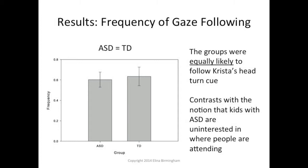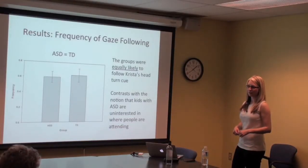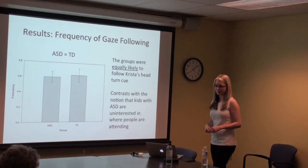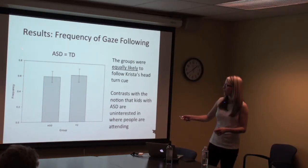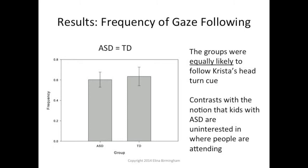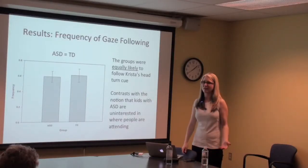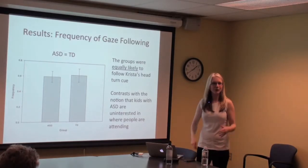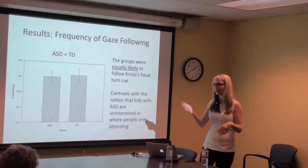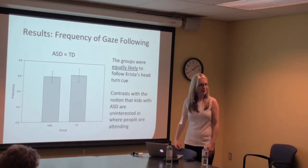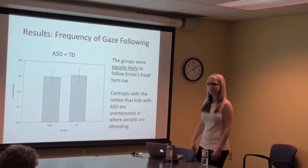It's worth noting the proportion is not at one — even typical kids follow about 60% of the time. We'll look at time course, because I think initially they're interested and then eventually they're like 'what are you doing?' — they don't continue to follow every single turn because they realize it's not really useful or contributing to the social interaction.